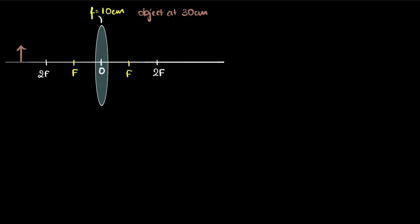Now there are three rays that we can draw. The first ray from the top going parallel to the principal axis. This after refraction will go through the principal focus because that's what principal focus is. All the parallel rays of light after refraction go through it.